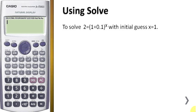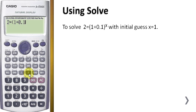In this video I will show you how to use SOLVE in Casio FX-570EX calculator. First you have to key in the formula: alpha equal, then bracket 1 plus 0.1 to the power of X, alpha X. After you key in the formula that you want to solve,